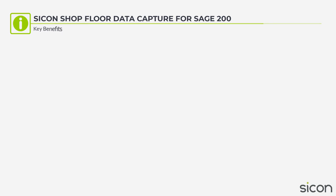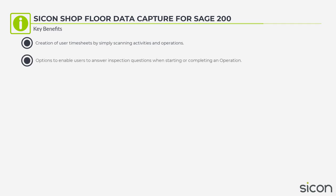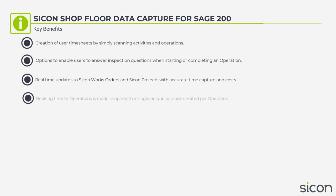Key Benefits: Creation of user timesheets by simply scanning activities and operations. Options to enable users to answer inspection questions when starting or completing an operation. Real-time updates to Saikon Works Orders and Saikon Projects with accurate time capture and costs. Booking time to operations is made simple with a single unique barcode created per operation.